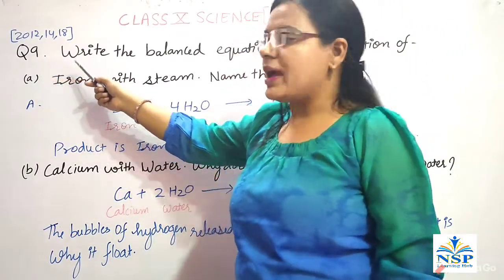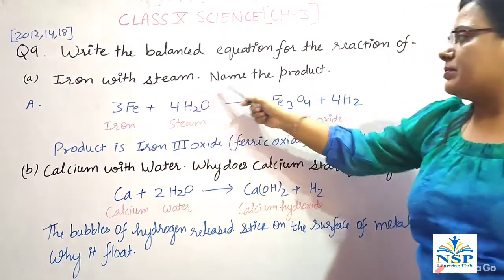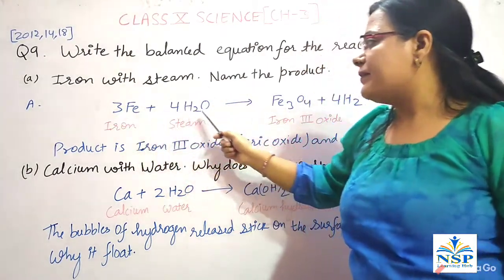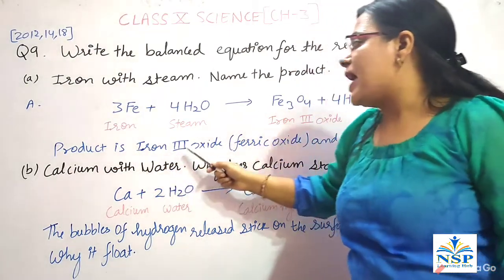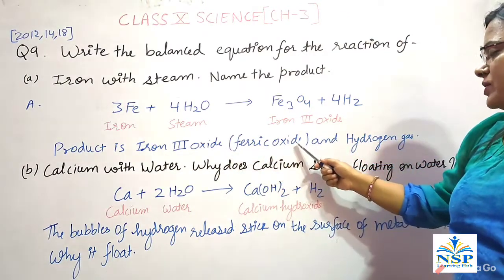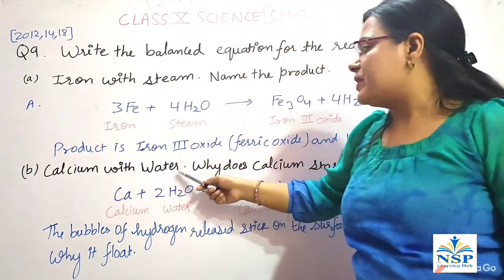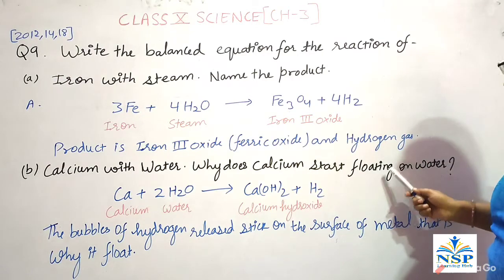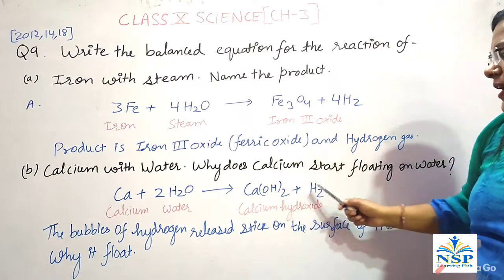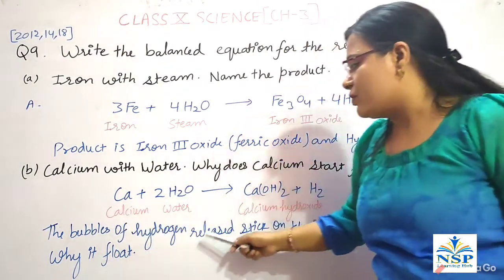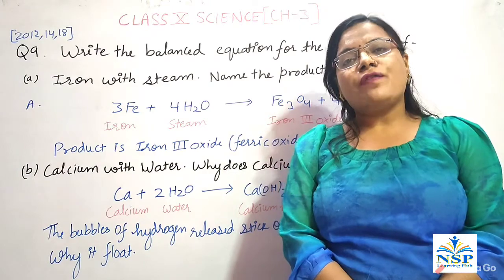Question number 9: write a balanced equation for the reaction of iron with steam and name the product. When iron reacts with steam, it gives iron(III) oxide (ferric oxide) and hydrogen gas is released. Second, when calcium reacts with water, why does calcium start floating on water? Calcium reacts with water to give calcium hydroxide and hydrogen. The bubbles of hydrogen released stick on the surface of the metal, and that is why it floats on the surface of water.